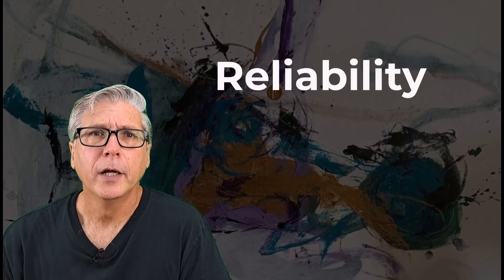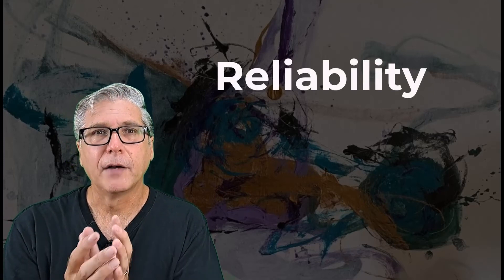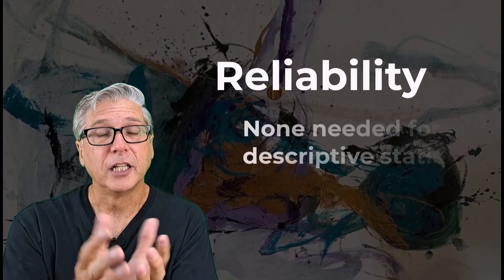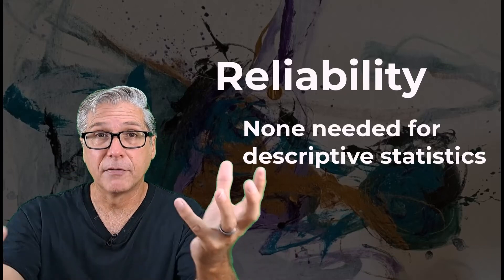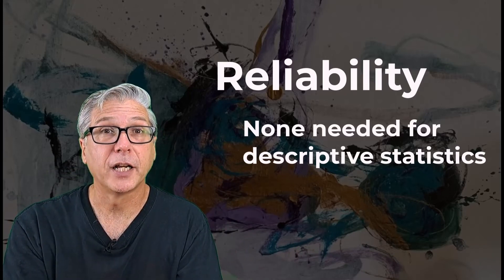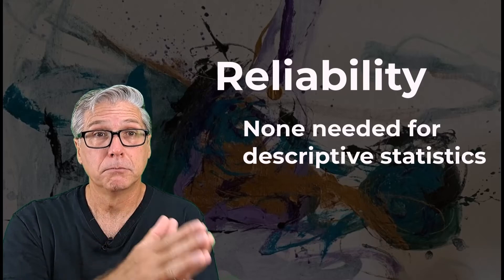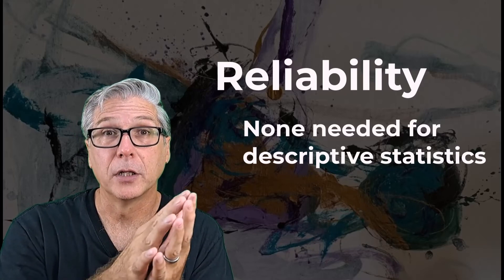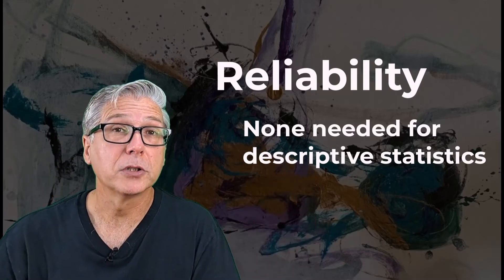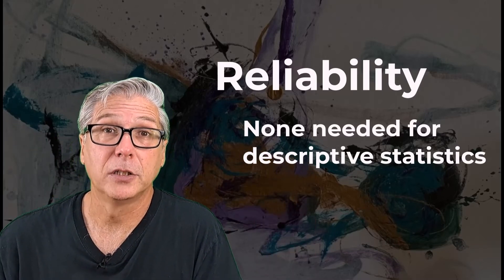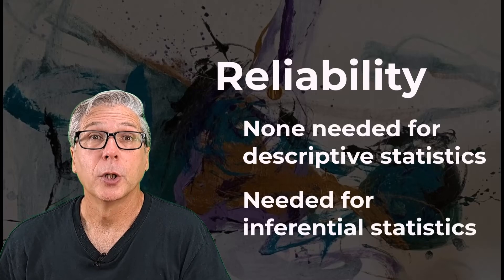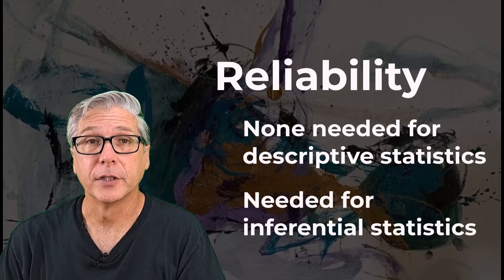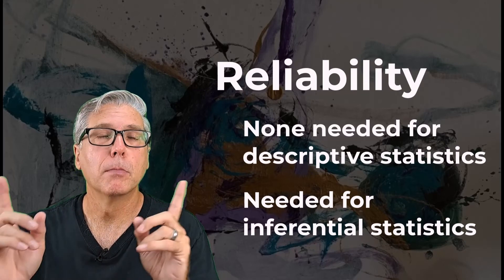The last element of statistics I want to talk about is a measure of reliability — this is a really important one. If I'm just working with the data I have, doing descriptive statistics, and I say 32% of the students are freshmen, I'm 100% sure of that. That's a fact, because I have the data in the sample. But if I want to talk about the population of all students and say 32% of my population are freshmen, that's just a guess. When we get to inferential statistics, we'll express the measure of reliability as a confidence level or a measure of error, but that's much later.